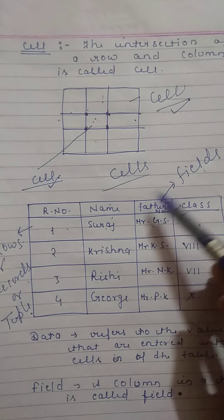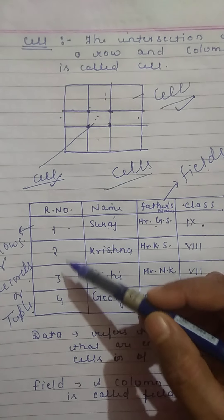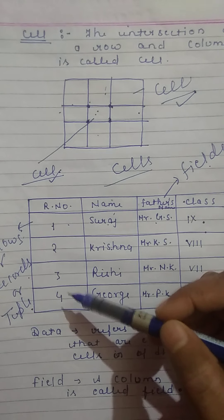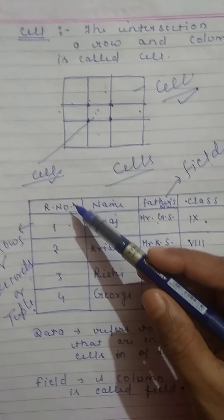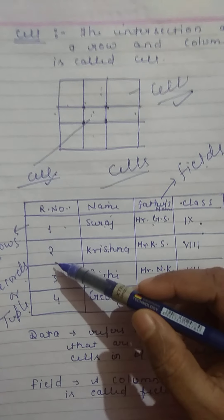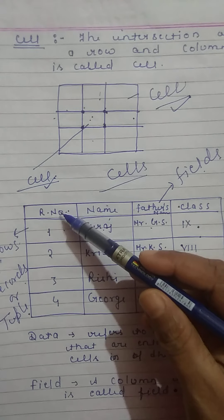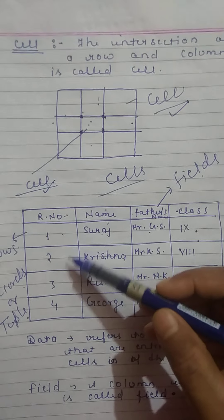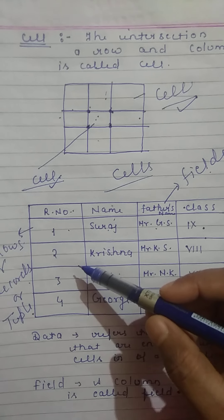The next thing is each field contains similar data. Similar data means under the roll number, we can maintain only the roll numbers. We cannot maintain name. So each field or each column contains similar data or same data.